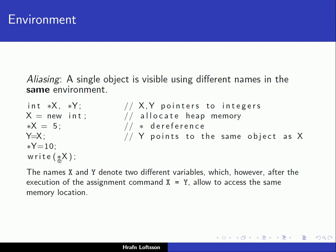We should get 10 as output because y and x are aliases — two different names representing the same object. The names x and y denote two different variables which, after the assignment y = x, allow access to the same memory location.